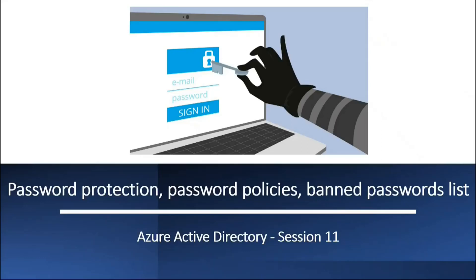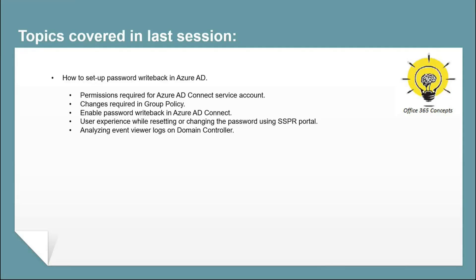Hi guys, I hope you all are doing well and welcome to the next video of this series. In the last video, we discussed how to enable and test password writeback in Azure Active Directory. We discussed what permissions you need to assign on the on-premise service account, what changes are required in group policy, what changes you need to do in Azure AD Connect and in Azure Active Directory, and how an administrator can verify if the password reset or password change activity was successful or not.